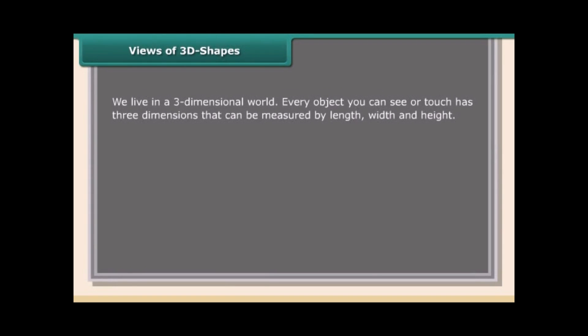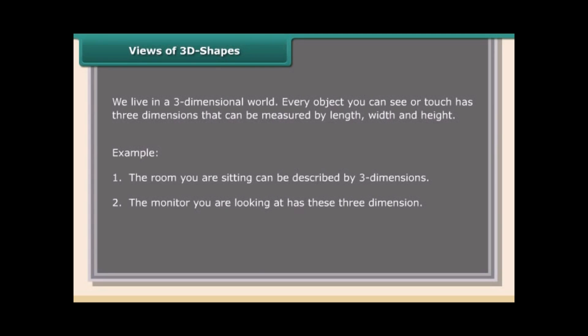Views of 3D shapes: We live in a three-dimensional world. Every object you can see or touch has three dimensions that can be measured by length, width, and height. For example, the room you are sitting in can be described by three dimensions, and the monitor you are looking at also has three dimensions.